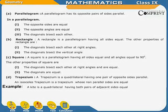Square. A square is a parallelogram having all sides equal and all angles equal to 90 degrees. The other properties of a square are: the diagonals bisect each other at right angles and are equal. Trapezium. A trapezium is a quadrilateral having one pair of opposite sides parallel. An isosceles trapezium is a trapezium whose non-parallel sides are equal.